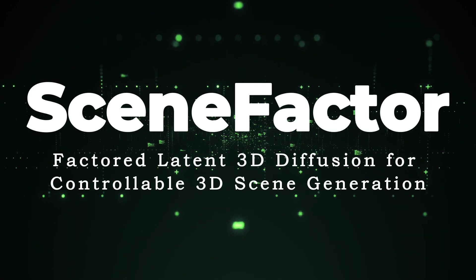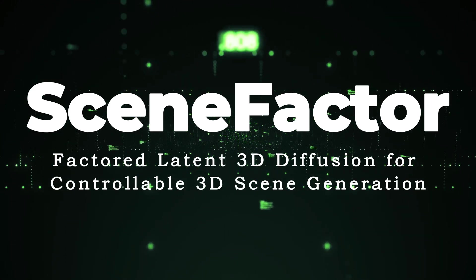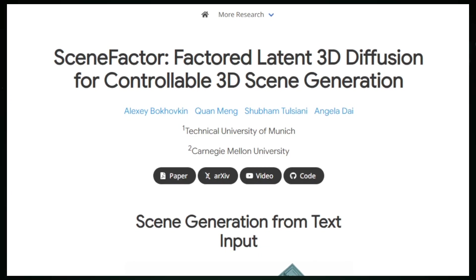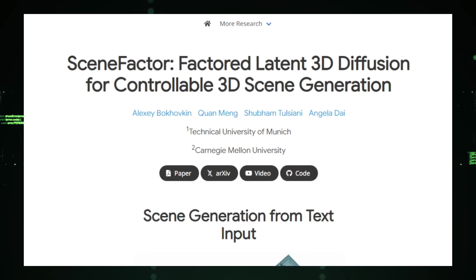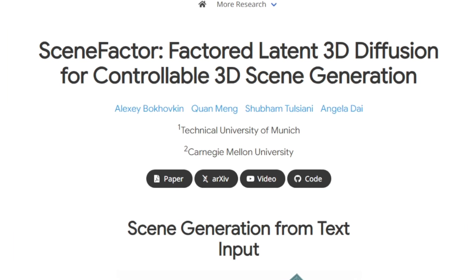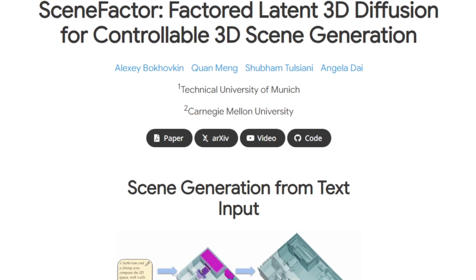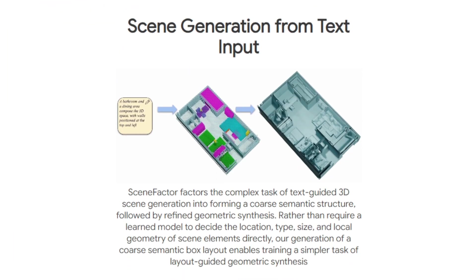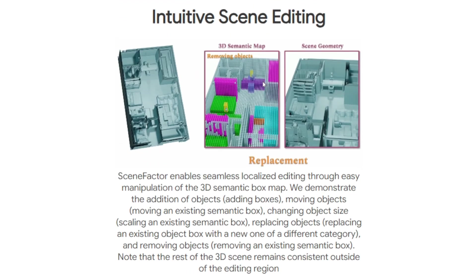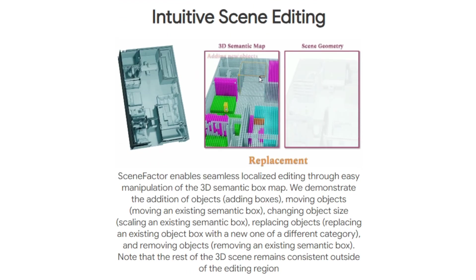Paper number four: Scene Factor — Factored Latent 3D Diffusion for Controllable 3D Scene Generation. This introduces an innovative method for creating detailed 3D scenes from textual descriptions while allowing for significant user control over the editing process. Scene Factor stands out with its dual-phase generation strategy, simplifying the complex task of 3D scene creation.